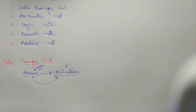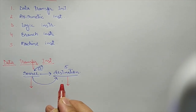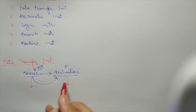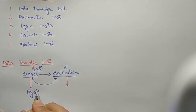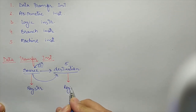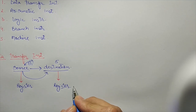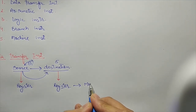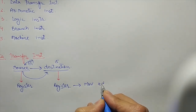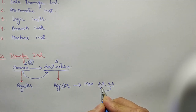There are different versions of data transfer instructions because the source and destination have different possible scenarios. For example, the source can be a register and the destination can also be a register — that is, transfer data from register to register. If we have to do this kind of transfer, the instruction we use is MOV Rd, Rs.